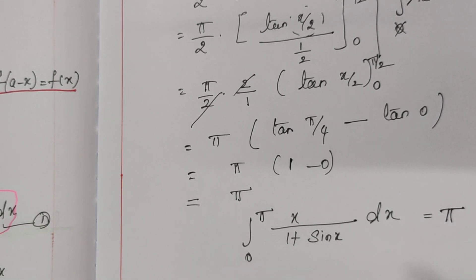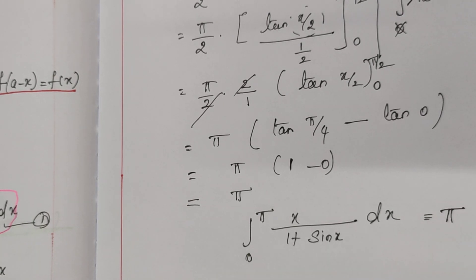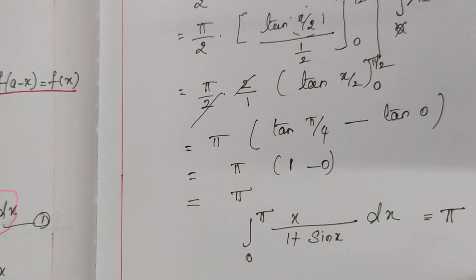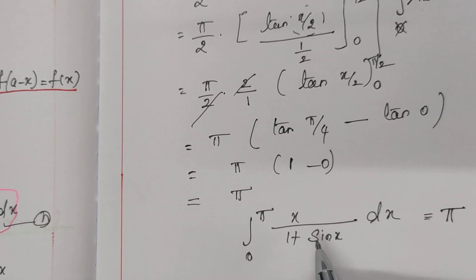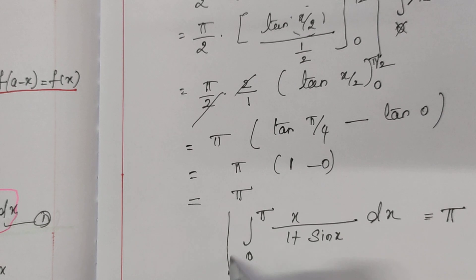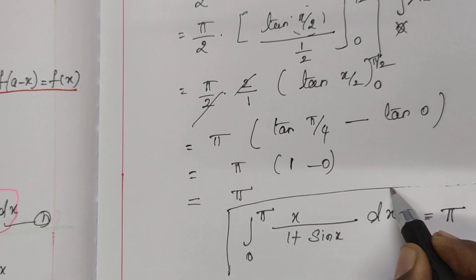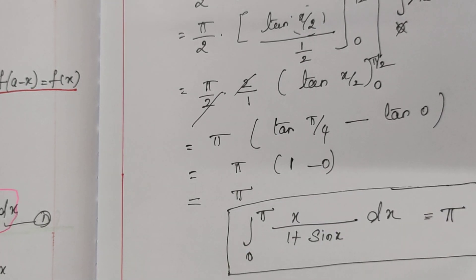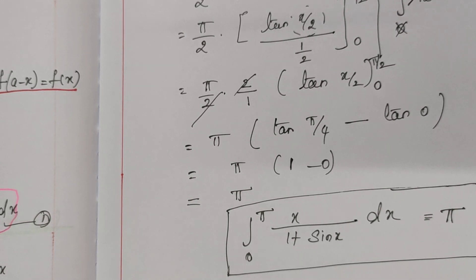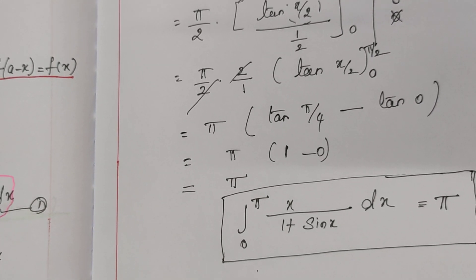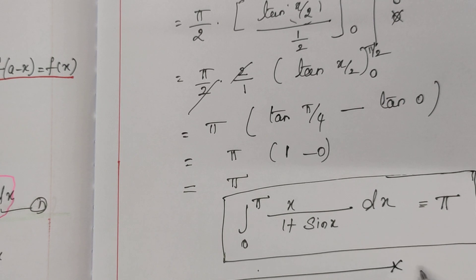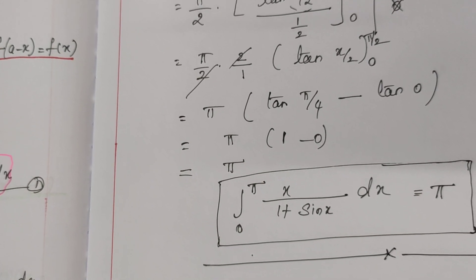This sum can also be done by one more method. I will teach that method in the next video. So the integral from 0 to π of x/(1 + sin x) dx is equal to π. Thank you.